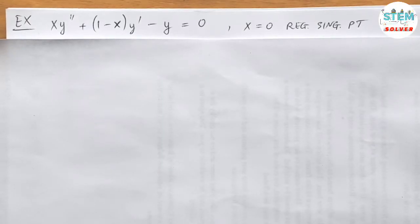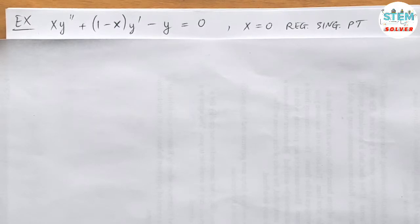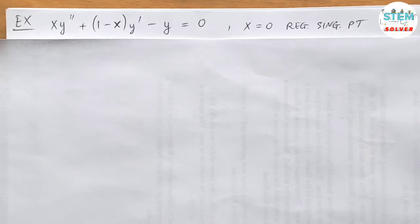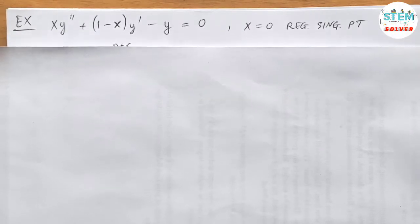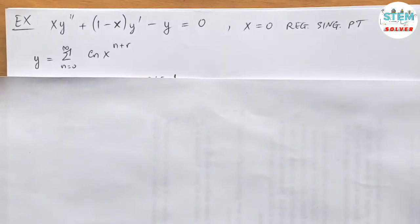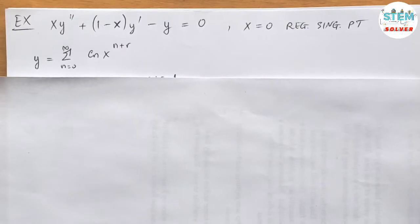Solve a homogeneous differential equation: x·y double prime plus y prime minus x·y prime minus y equals 0, and you are given that x equals 0 is a regular singular point. Our solution is given in the form y equals a power series from 0 to infinity of c_n · x to the n plus r.